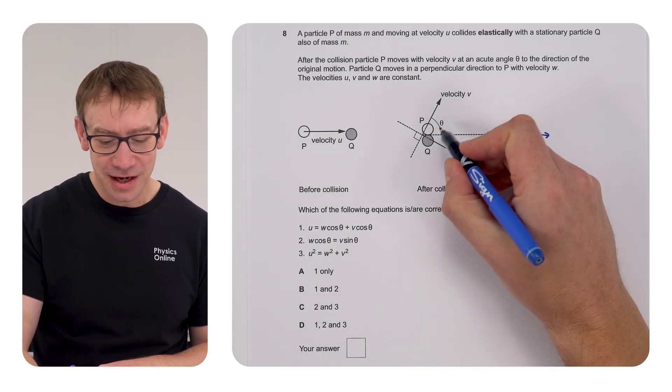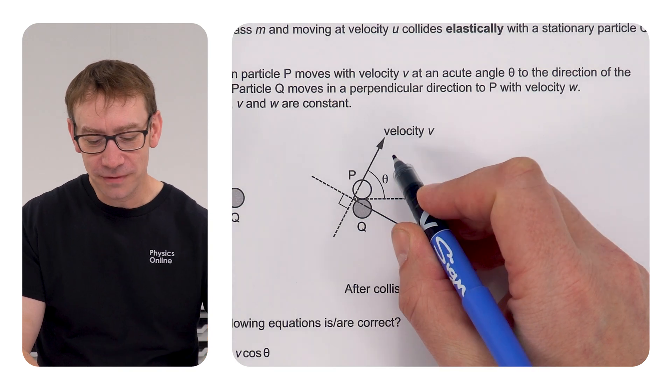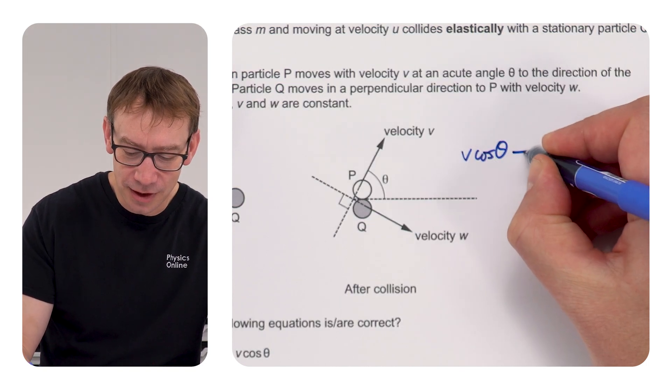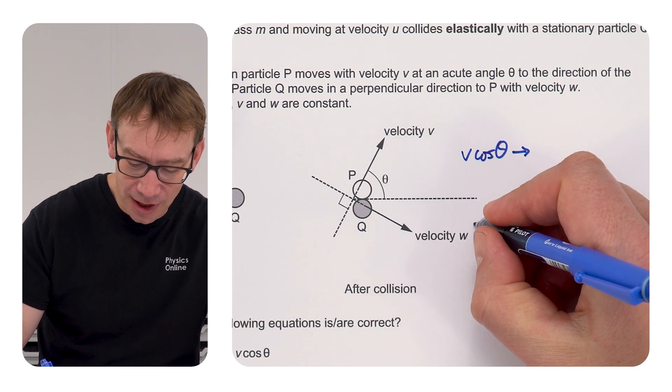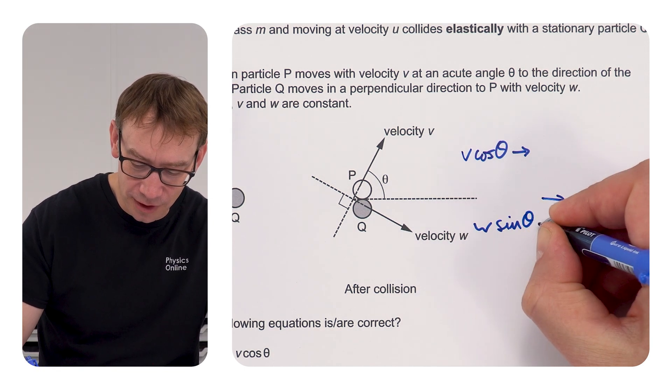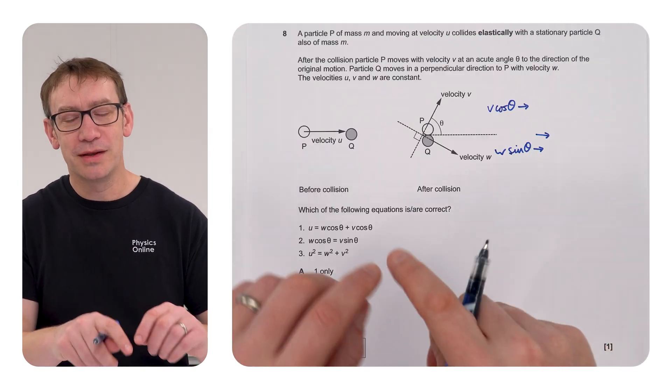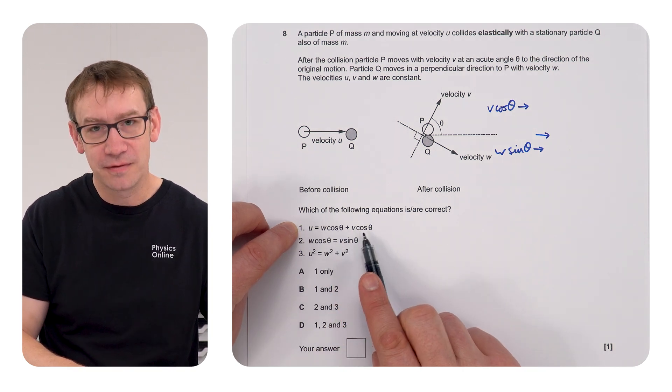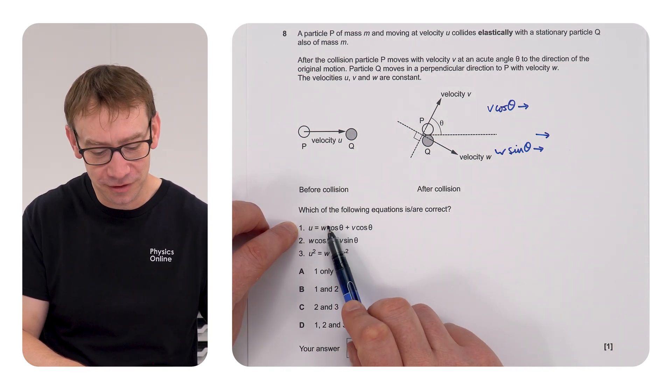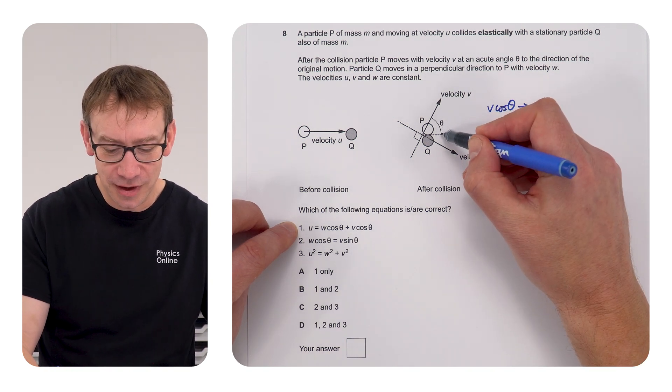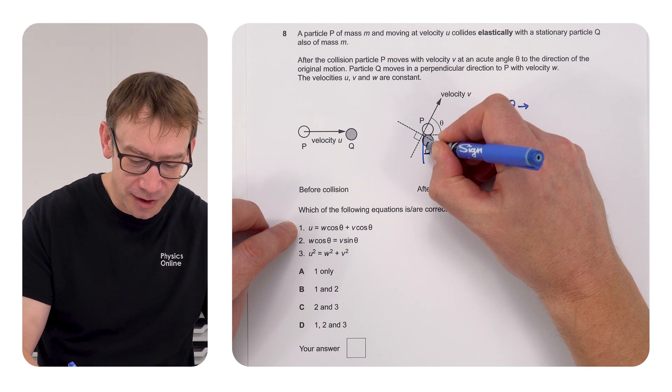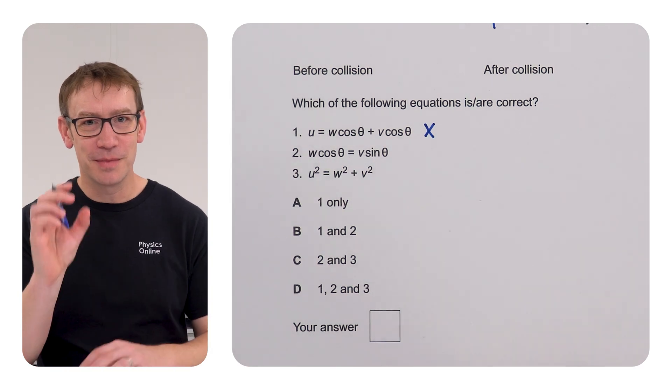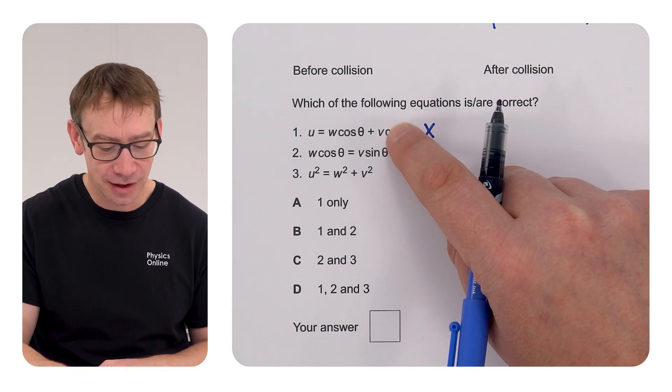But here's the thing. They've labelled that angle there as theta. So, whatever we think about for particle P, there's going to be something like V cos theta in this direction. And in this direction, we're also going to then have W sin theta in that direction. Which means, when we think about the momentum going this way, it can't be this one here. Because there we've got W cos theta and V cos theta. You can't have two cos's. One of these must be a sine, because that angle there is theta, and this angle over here must be theta as well.